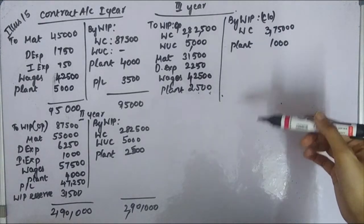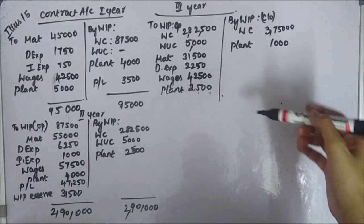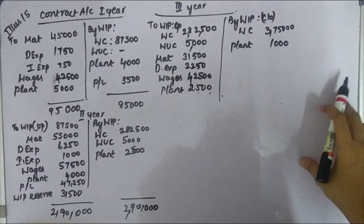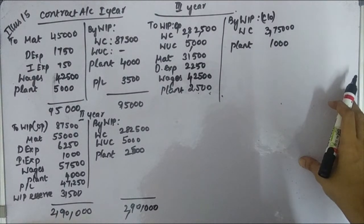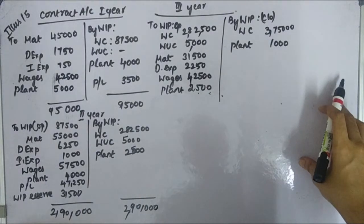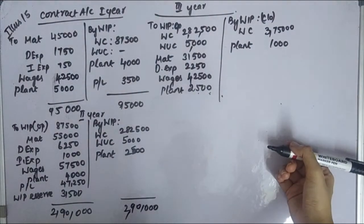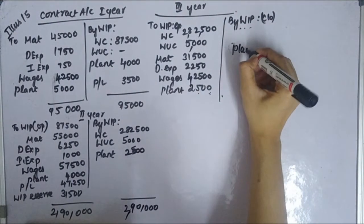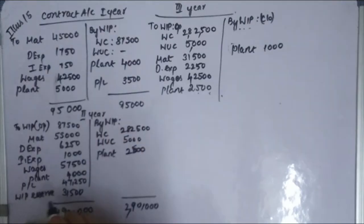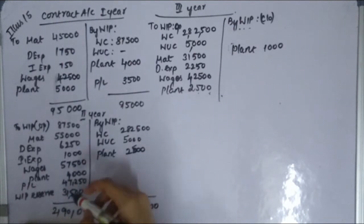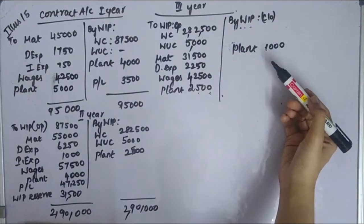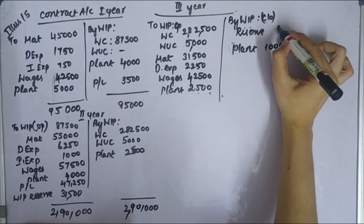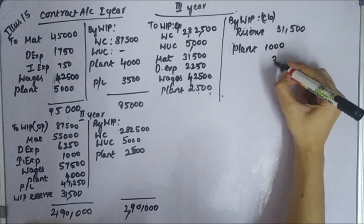In the third year, since the contract is complete, we transfer the entire profit. There is a special note: if there is a work-in-progress reserve from the previous year, it will appear on the credit side. The closing reserve is subtracted from the other side — Rs. 31,500. Work certified in year 3 is Rs. 3,75,000.